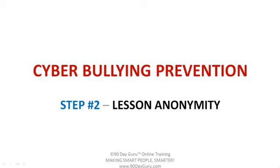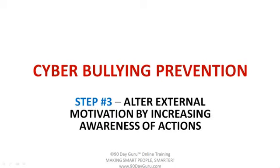Step number two: when they're using the computer to bully, it's because they're anonymous — they're not inhibited by what they're doing. So you've got to lessen that anonymity by making it more public. In the organization that you're in, definitely connecting the IP addresses and making that less anonymous.